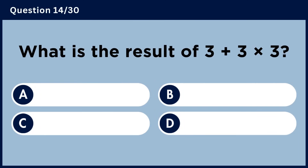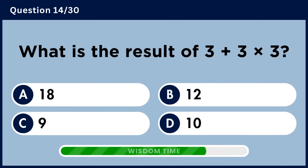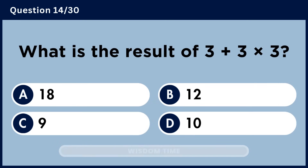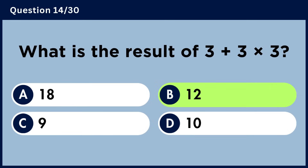What is the result of 3 plus 3 multiplied by 3? Answer B, 12.